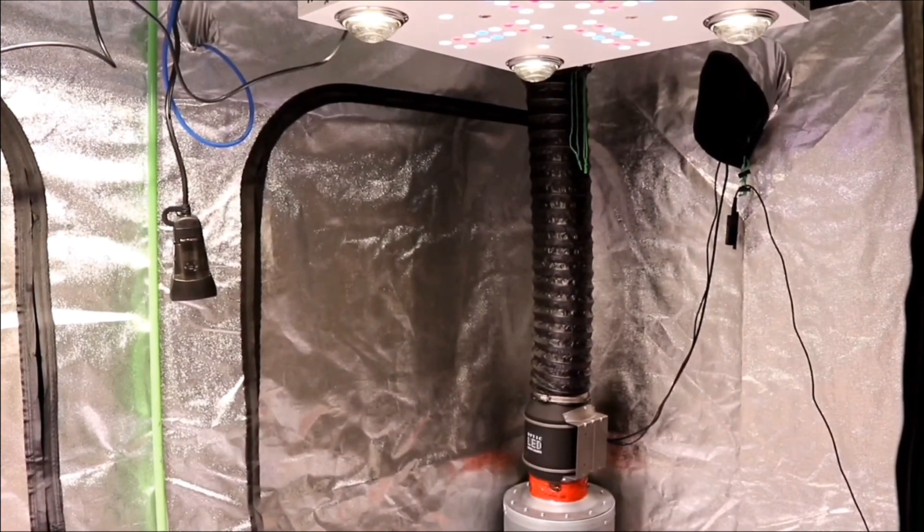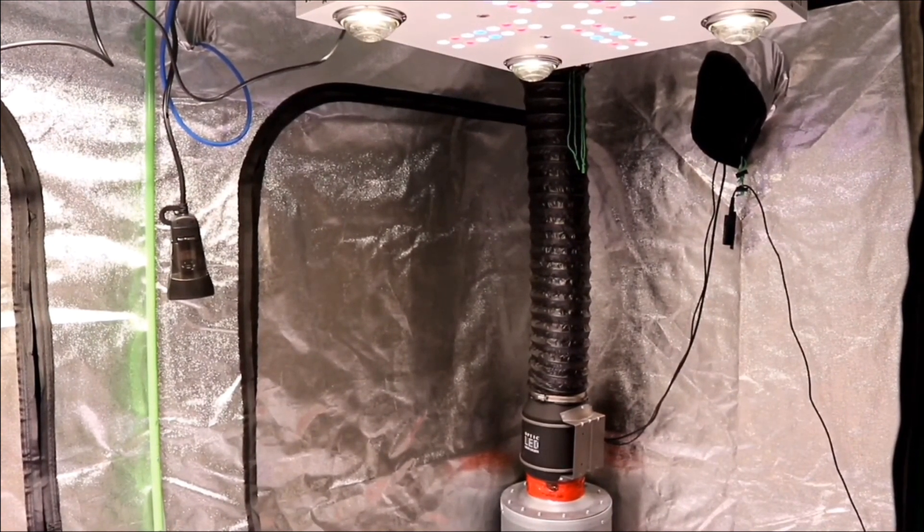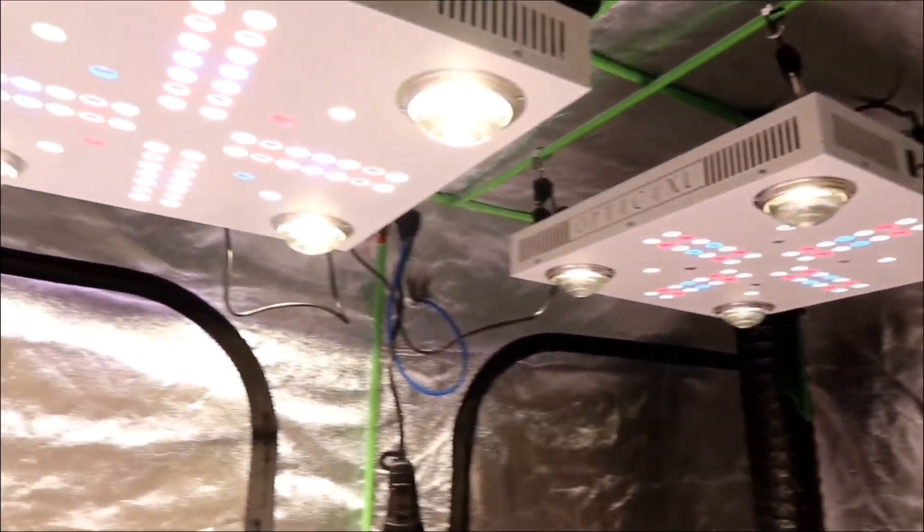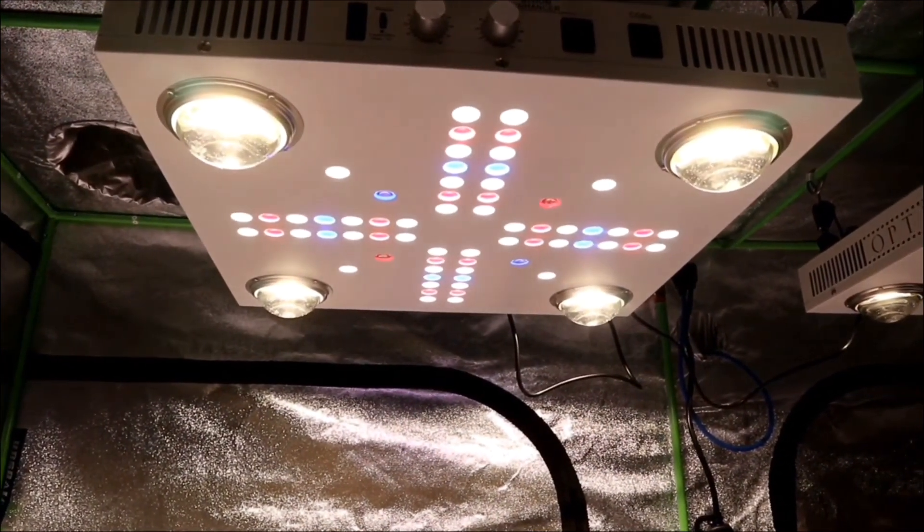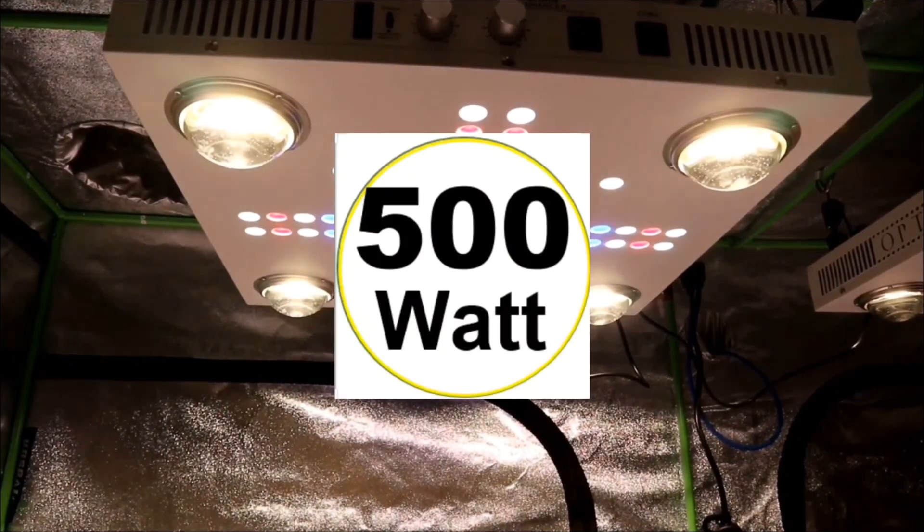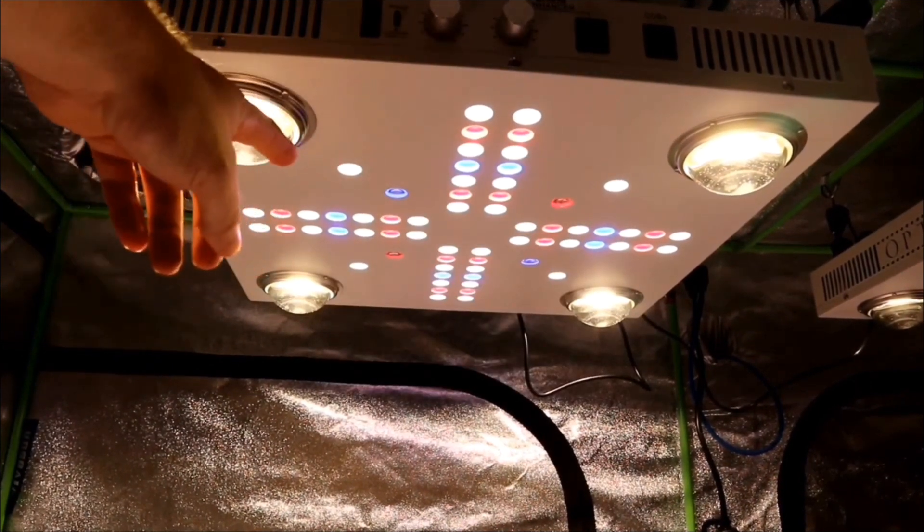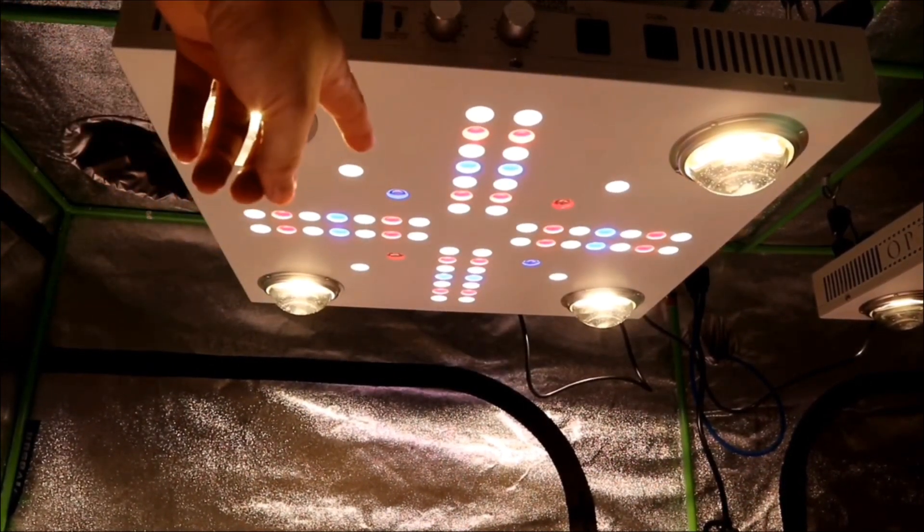But yeah, the pair of 4XL next gen. You got the Cree XPE reds and blues. Samsung 301H for the white. The cobs are obviously the Cree CXB 3590s. 3500 Kelvin in this light here.